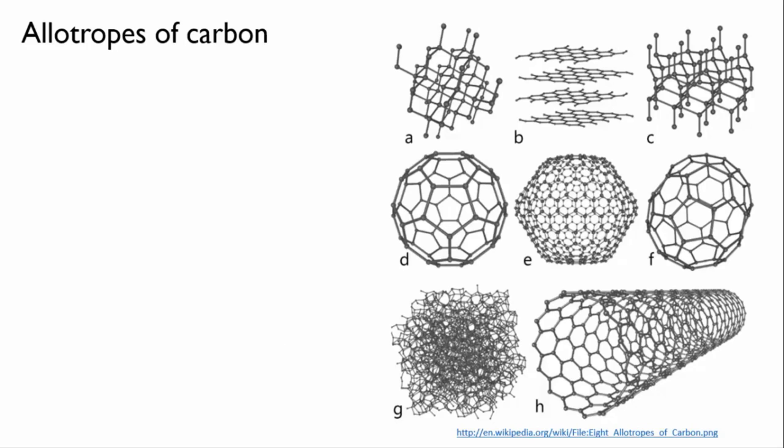So the eight that they're showing here are diamond and graphite and Lonsdaleite, which is a little bit like diamond but the arrangement of bonds has a slightly different symmetry. It's named after a famous British crystallographer Kathleen Lonsdale.